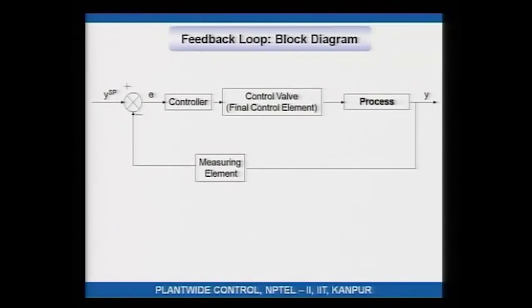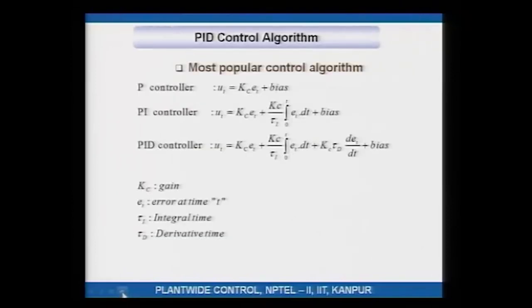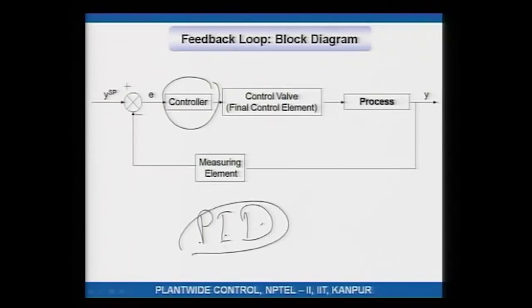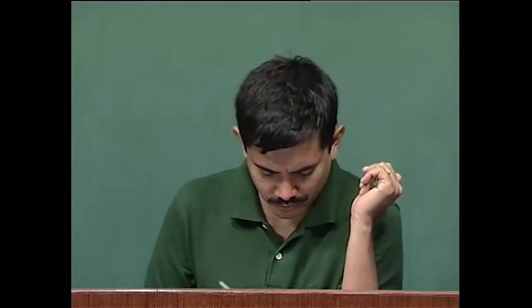This is where we left off last time — a feedback loop with its block diagram. The most popular control algorithm implemented in the controller is called the PID control algorithm, where PID stands for proportional, integral, and derivative. This PID control algorithm is the most commonly used in industry — about 90 percent of controllers used in industry are of the PID type, in fact of the PI type. Even as fancy model predictive controllers and advanced controllers have come into being, the PID controller is still holding strong.